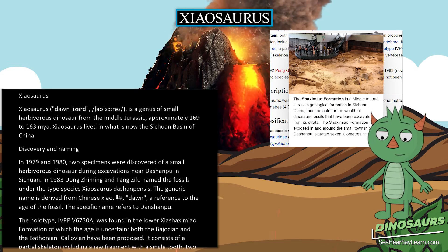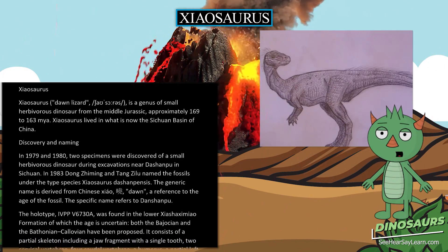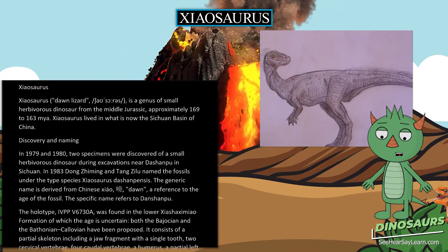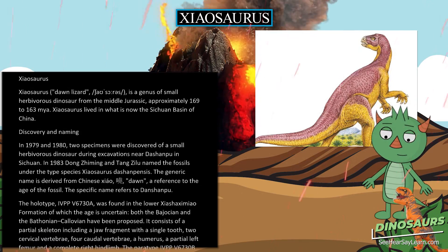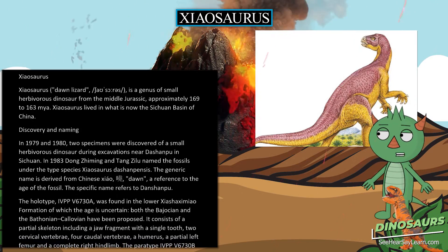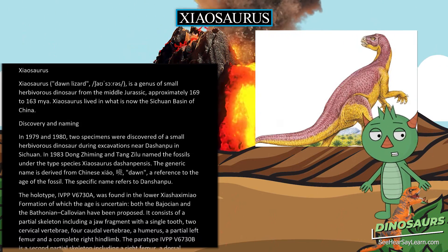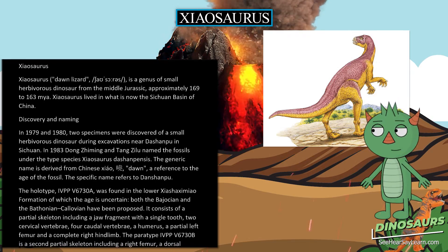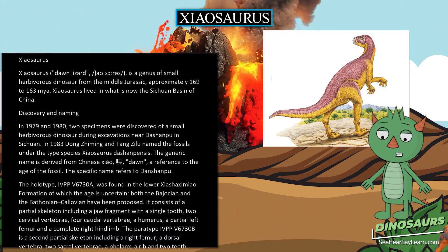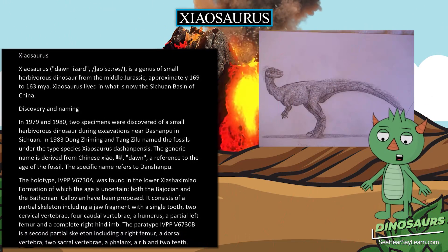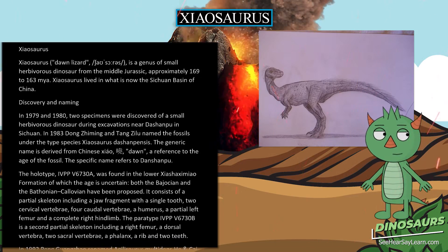In 1979 and 1980, two specimens were discovered of a small herbivorous dinosaur during excavations near Dachampu in Sichuan. In 1983, Dong Ximing and Tang Xilu named the fossils under the type species Shiasaurus dachanpensis. The generic name is derived from Chinese Xiao, meaning 'Don', a reference to the age of the fossil. The specific name refers to Dachampu.